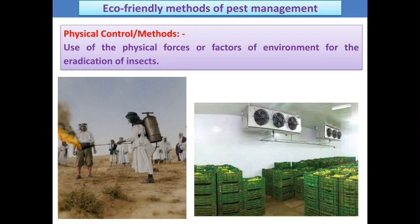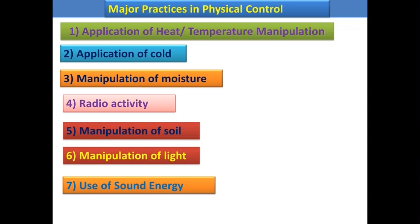Physical methods are also considered eco-friendly methods of IPM because there is no use of chemicals in these methods. So what are the physical methods of IPM? With the help of various physical forces or physical factors of the environment, we can eradicate different pest populations in our area or field. It means manipulation of different physical factors of the environment that will help to reduce the pest population. Let us see them one by one.